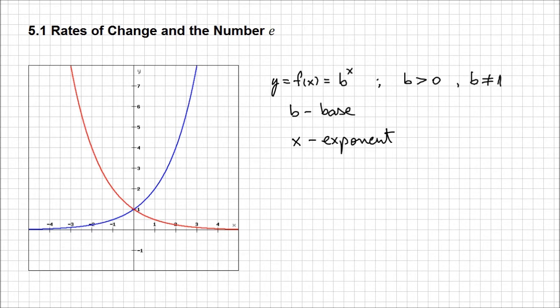On the graph you see two curves — they both represent exponential functions, but the blue curve is increasing while the red curve is decreasing. What makes it different is the base. For the blue curve the base is greater than one, while for the red curve the base is less than one but obviously positive, so somewhere between zero and one. This is just a reminder of exponential functions.